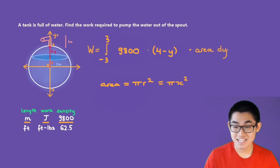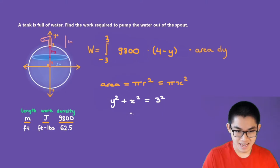Since our formula is dy, we have to convert the X into a Y. We know that the equation of this entire circle is Y to the power of two plus X to the power of two equals three to the power of two, because the radius is three meters. This means that X square is equal to nine minus Y to the power of two.